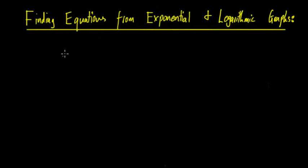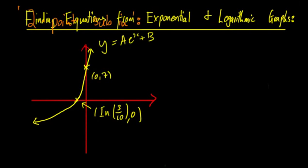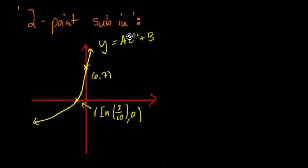In this video we're going to be doing something slightly different. Typically we have the equations of graphs of different functions and we have to graph them, but rather we're going to look at what you do if you have an exponential or logarithmic graph and you have to find the equation of it. We look at the different points, the asymptotes, and work back to find the original equation the graph came from.